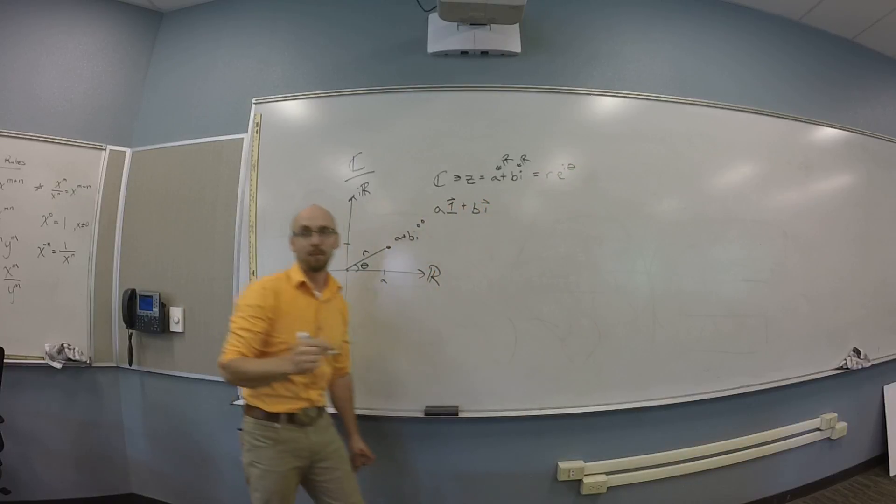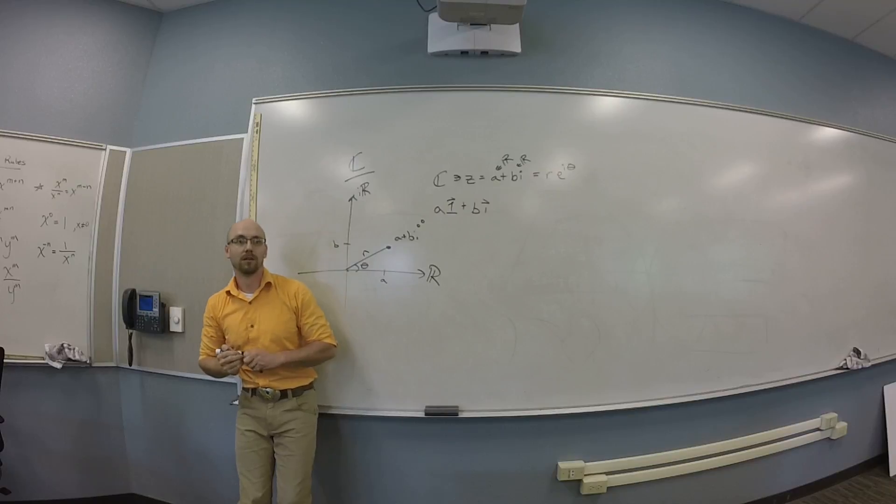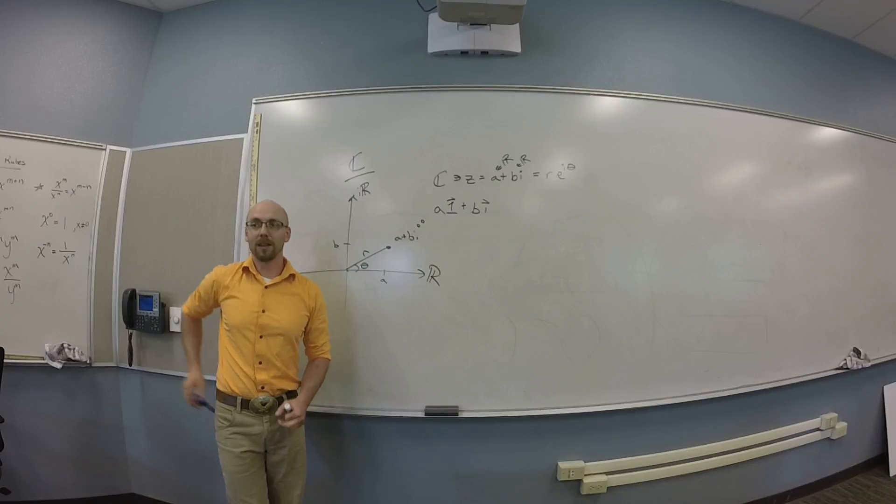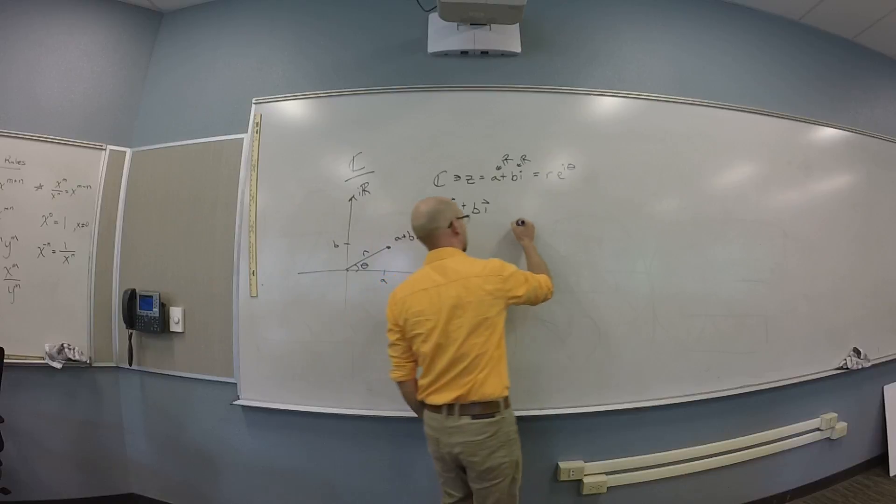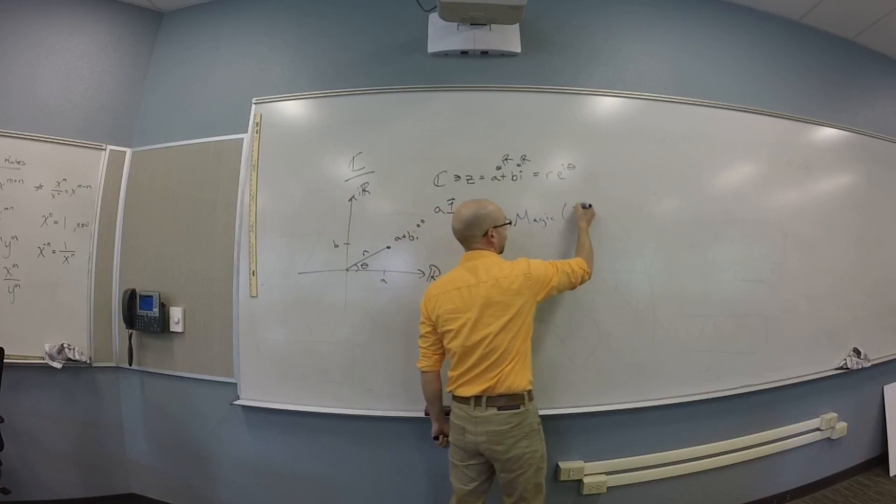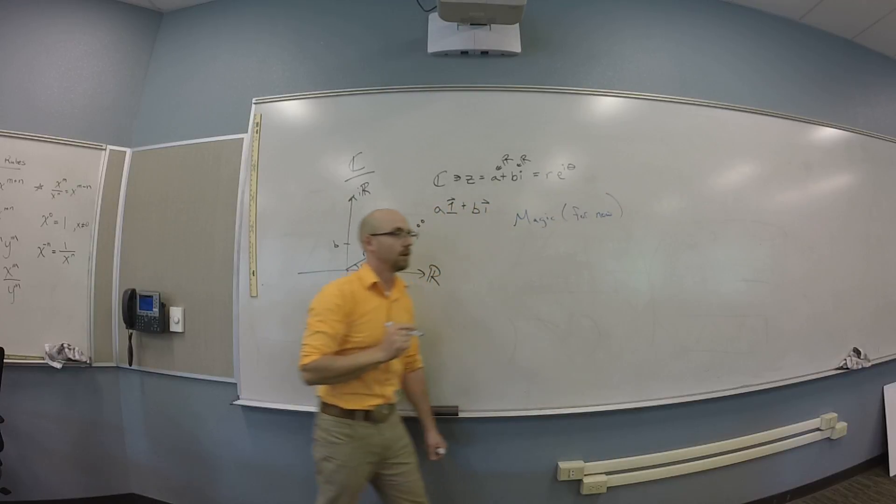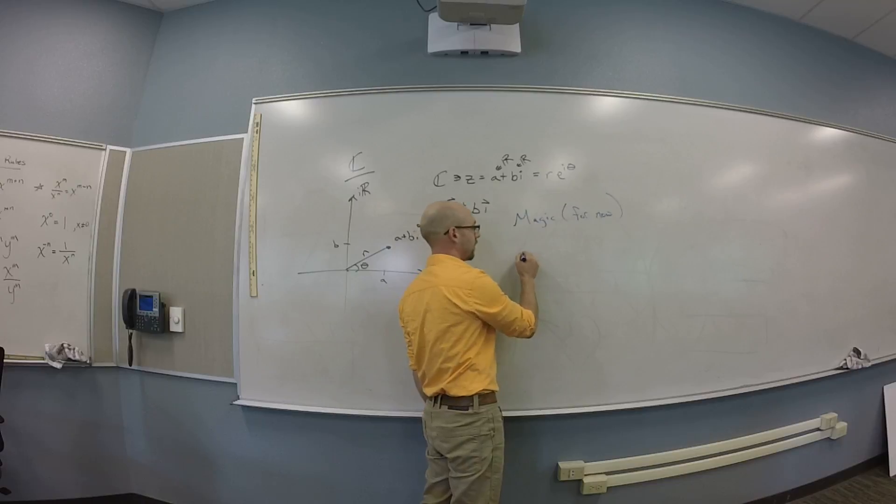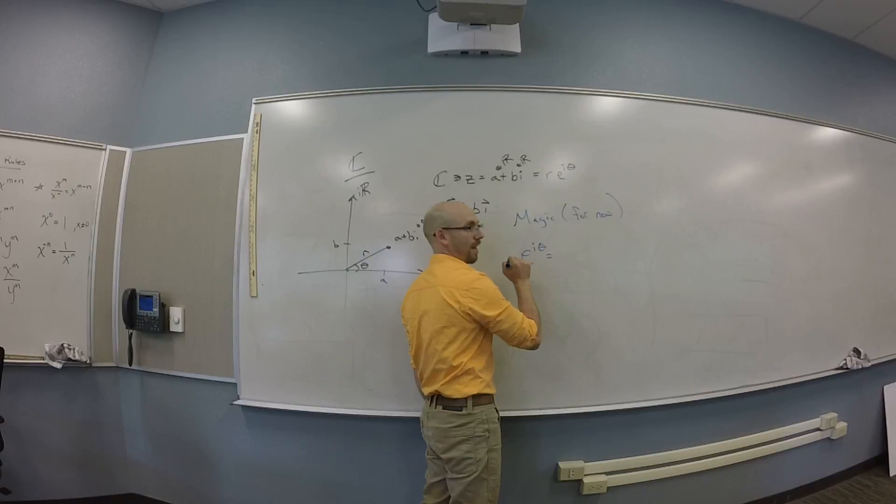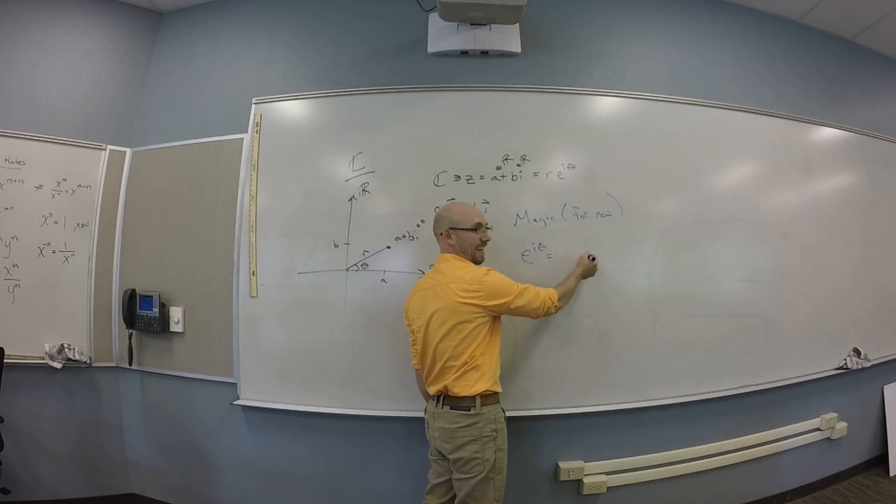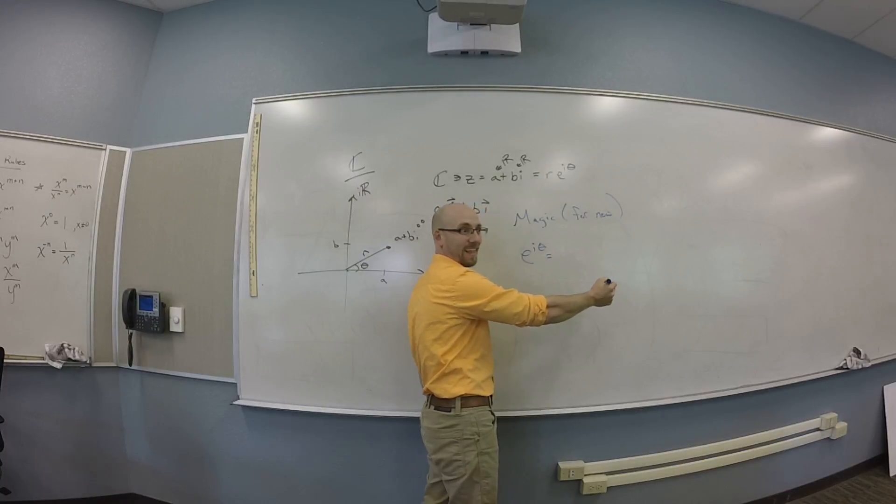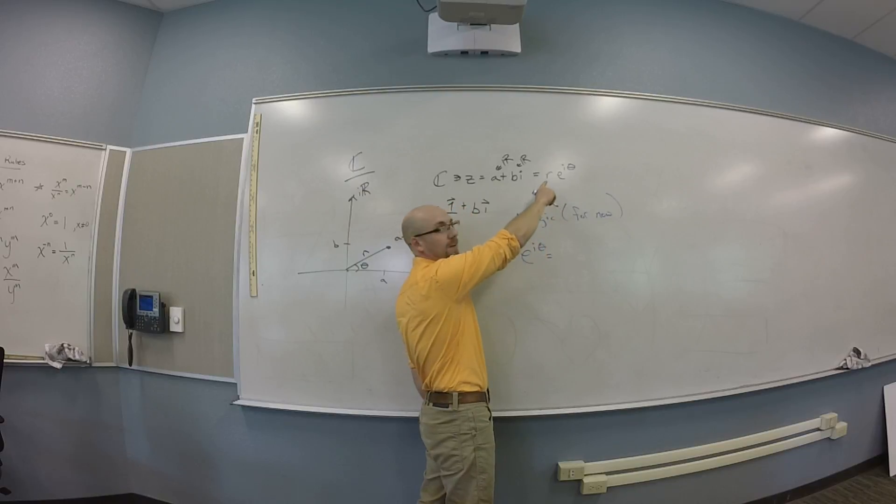I remember that from Trig. You remember this from Trig? Cool. So this is utilizing a fact that is magic. It's not actually magic. It's just magic for now. Okay? The magic for now is this thing called Euler's identity, which is that E to the I theta is... One over R, give me a second. Is what? One over R. Something over R.